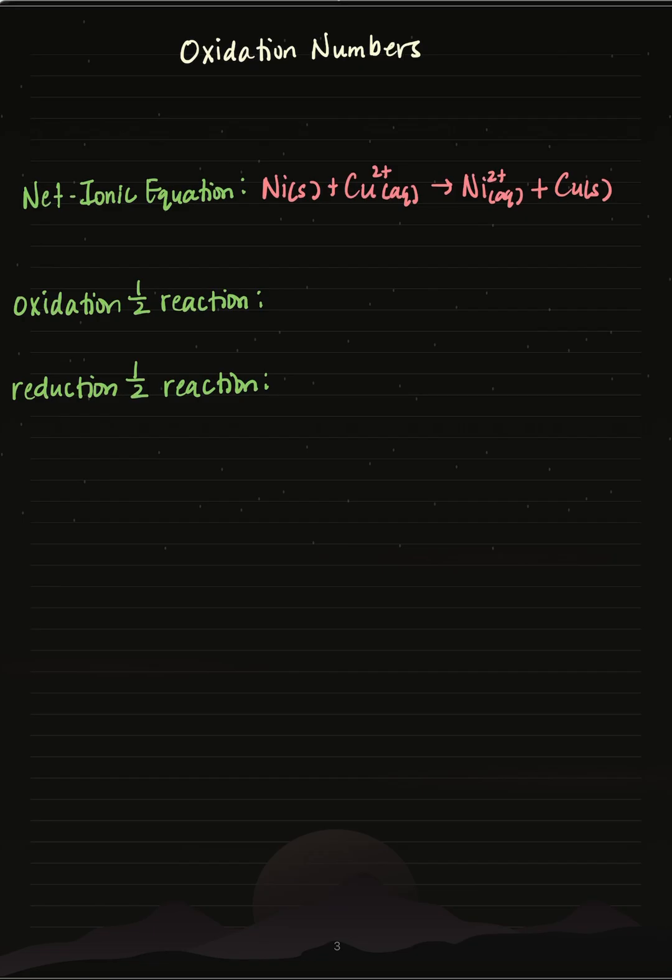How can we tell what was oxidized and reduced in an ionic equation? So let's use oxidation numbers. Elements have oxidation numbers of zero.